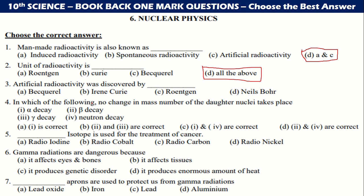Artificial radioactivity was discovered by Irene Curie. Which of the following shows no change in the mass number of daughter nuclei takes place? That one is B, so 2 and 3 are correct. Cobalt isotope is used for the treatment of cancer. Gamma radiations are dangerous because it produces genetic disorder.